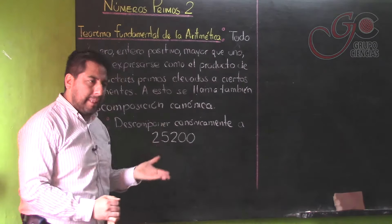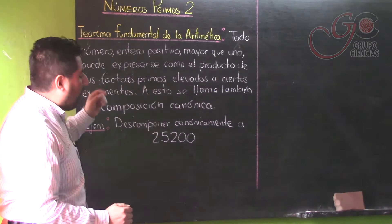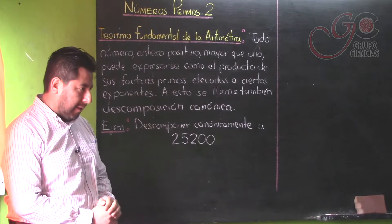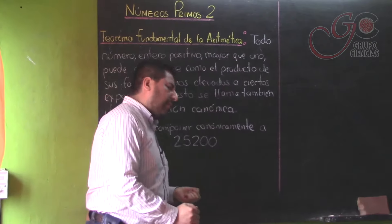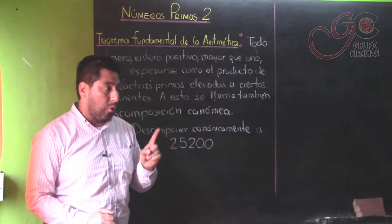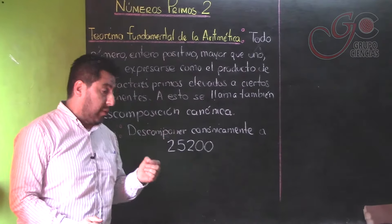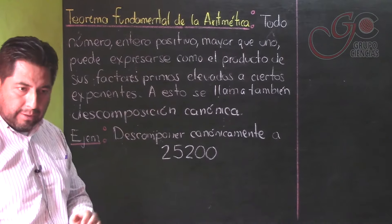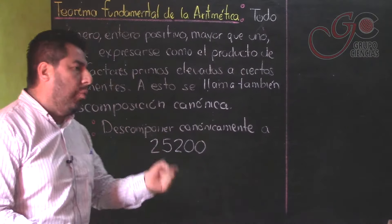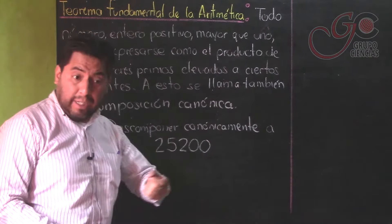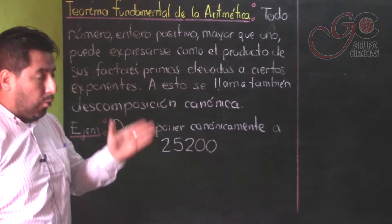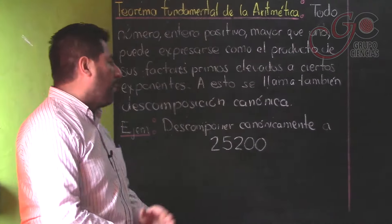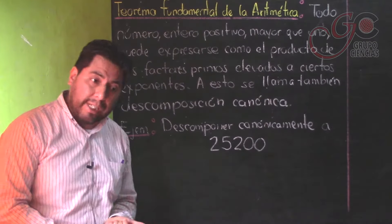Vamos a empezar entonces con lo que es la descomposición canónica, o más conocido como el teorema fundamental del aritmética. ¿En qué consiste? Consiste en expresar un número como producto, como factorizar, como un producto de factores primos elevados a ciertos exponentes. Todo un número entero positivo mayor que la unidad se podrá descomponer como producto de factores primos elevados a ciertos exponentes. A eso se llama descomposición canónica.